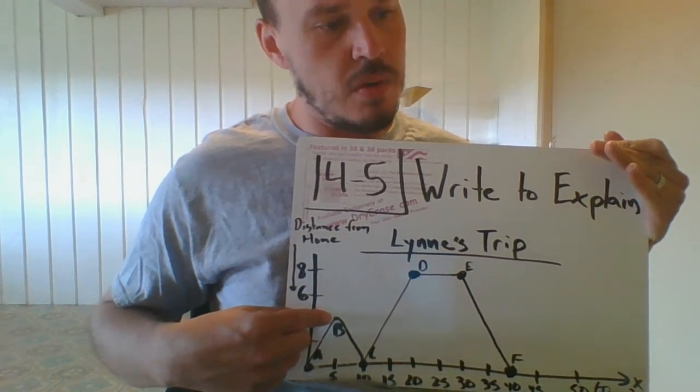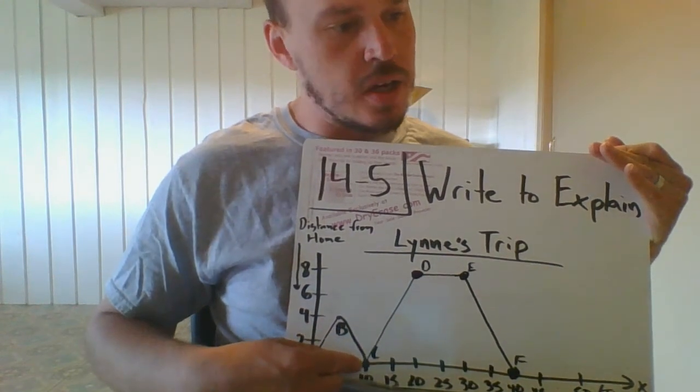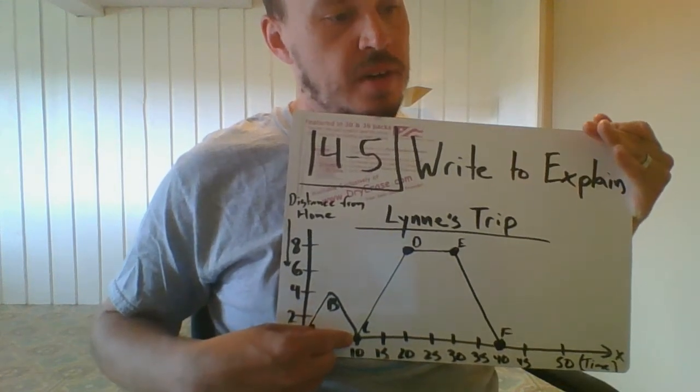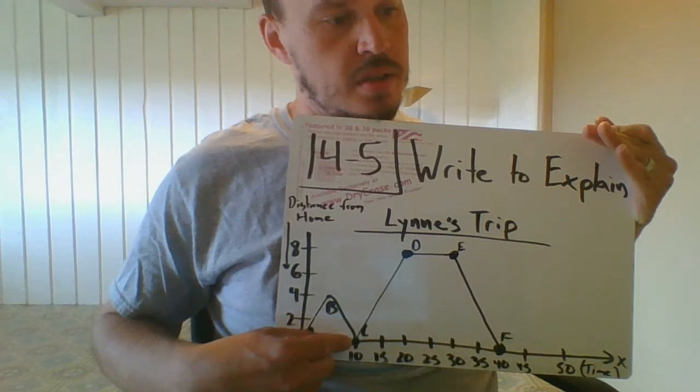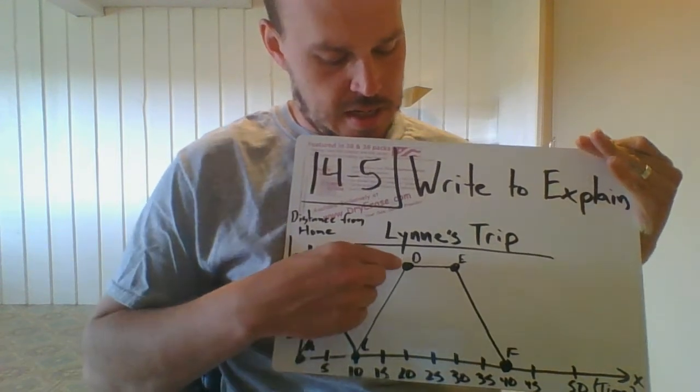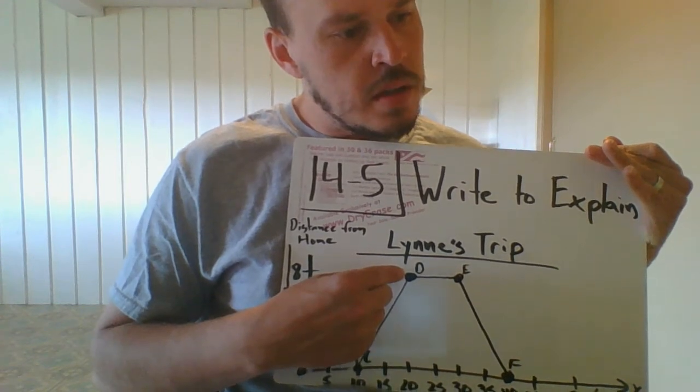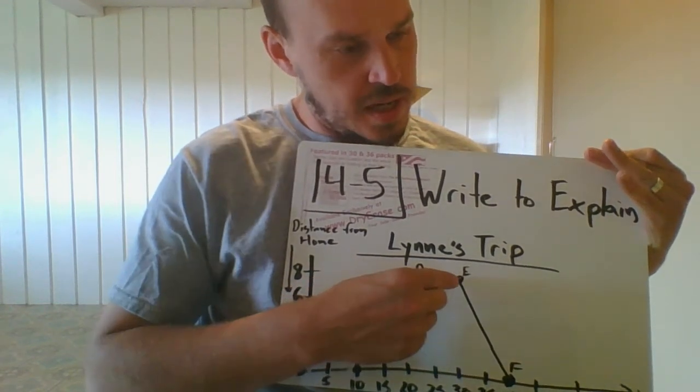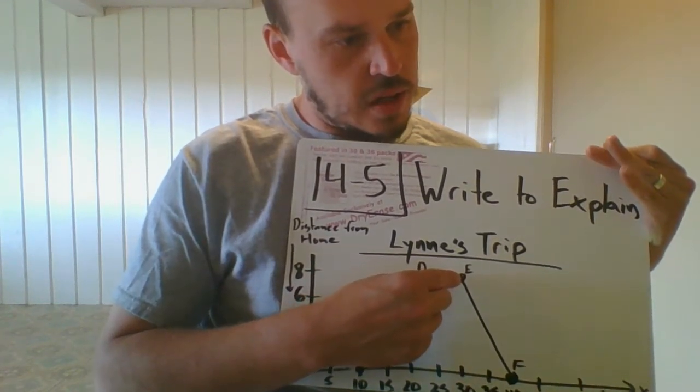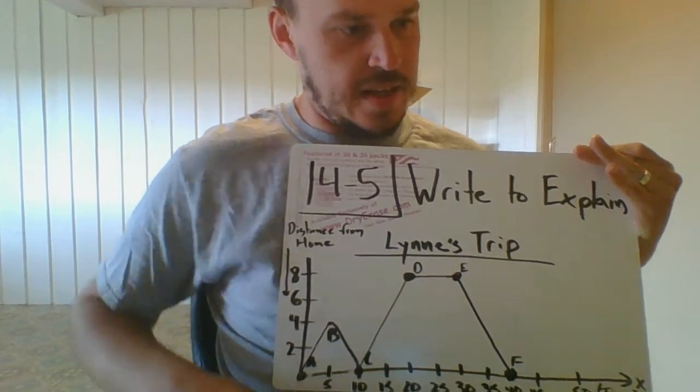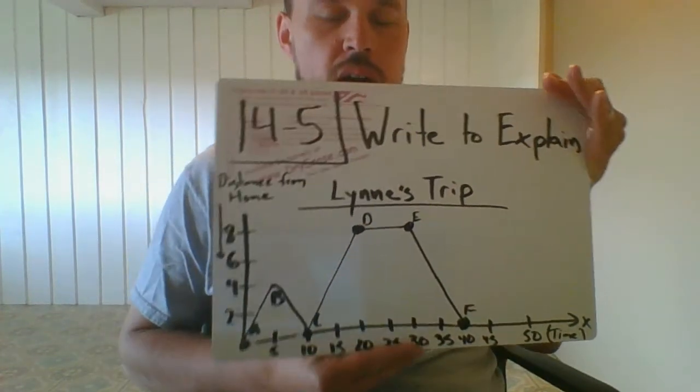After getting her wallet, Lynn walks to the store at point D. She shops for 10 minutes to point E, then she walks home, arriving at point F. And that's the end of her 40-minute trip to the store.